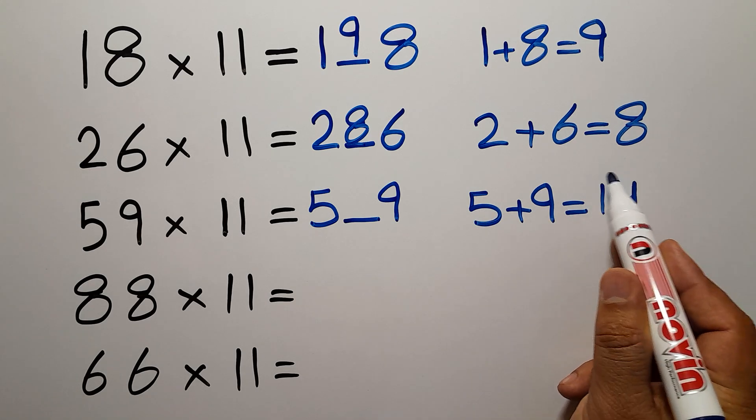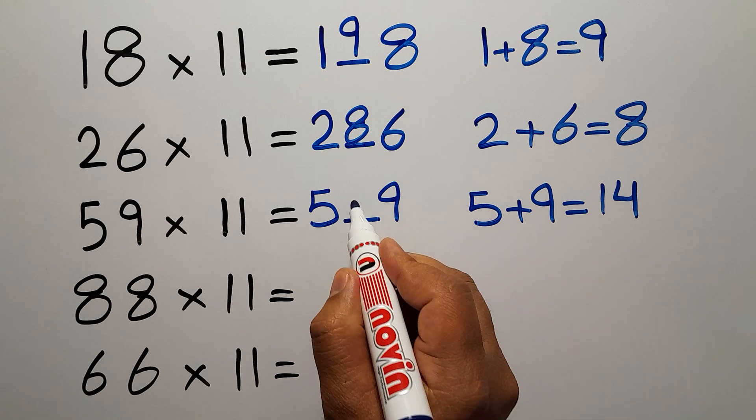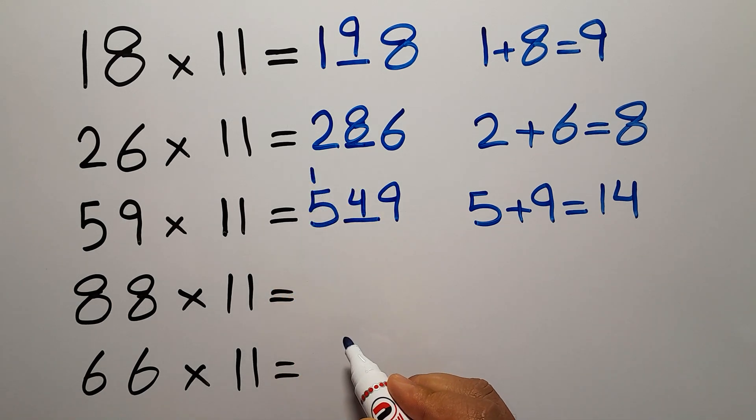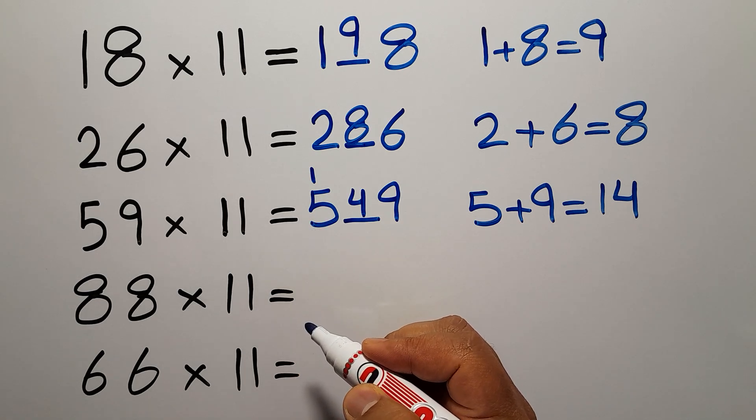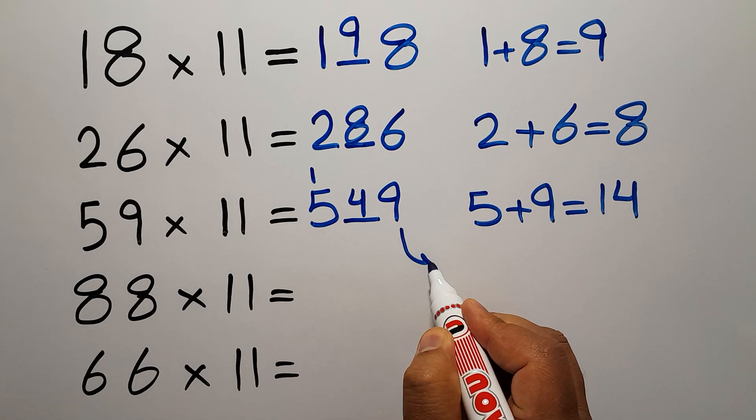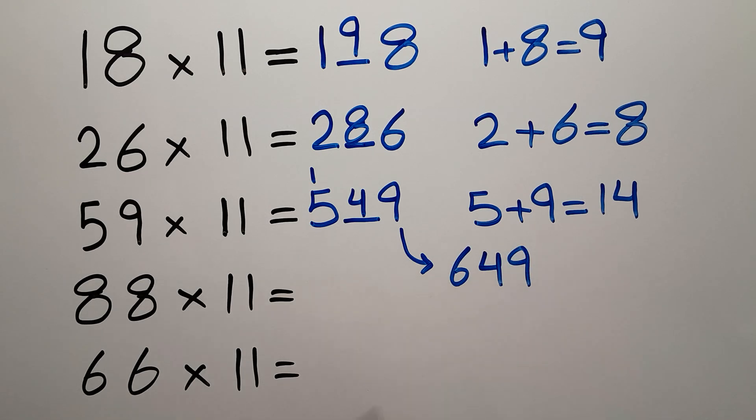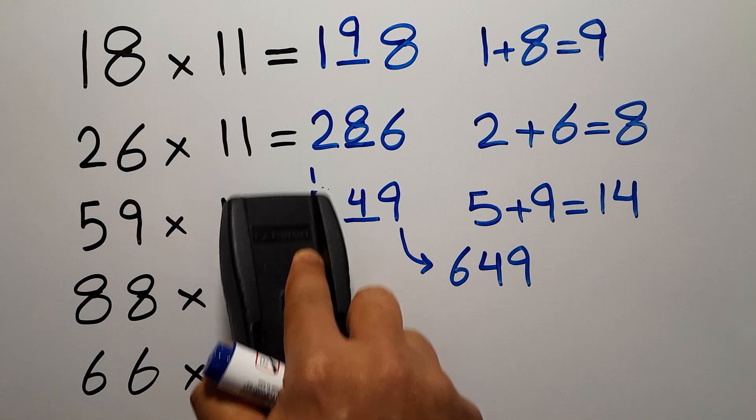Now in this multiplication the sum is greater than 9, so write 4 here and then carry 1. Then carry 1 here. 1 plus 5 gives us 6, so the answer is 649.